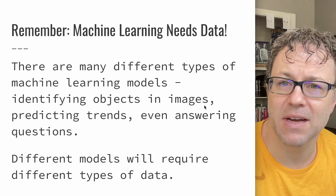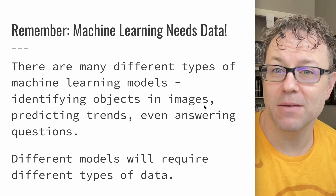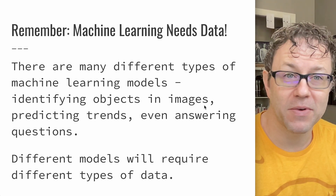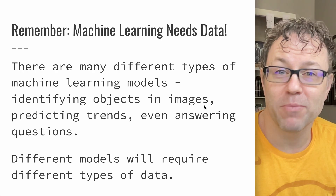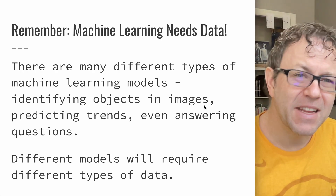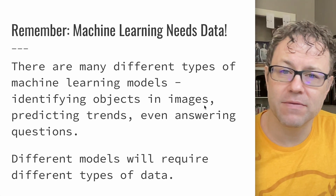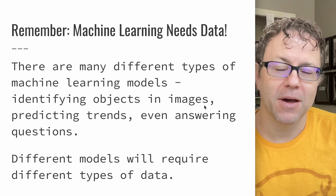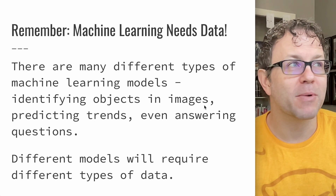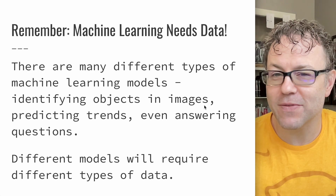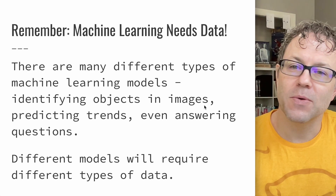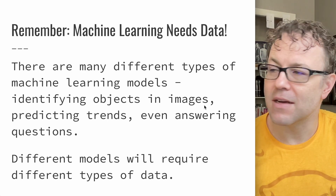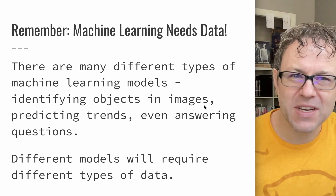We're going to see models that identify objects in images, we're going to predict trends, we're going to answer questions. There are different types of generative models — there's a lot of different things out there, and each one of them is going to need a different kind of data. Training an image recognition model on a bunch of textbooks probably won't do you much good unless you're trying to recognize images of textbooks. So we need to think about the differences and how to treat data differently.